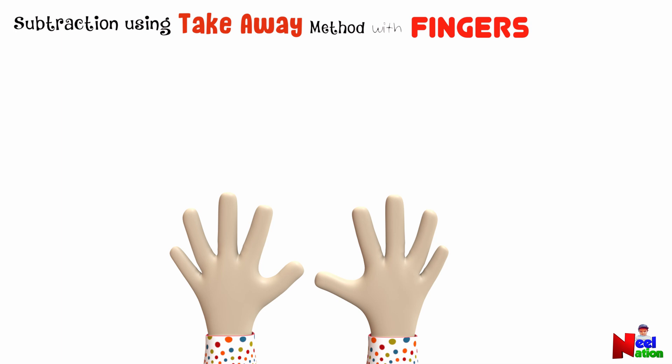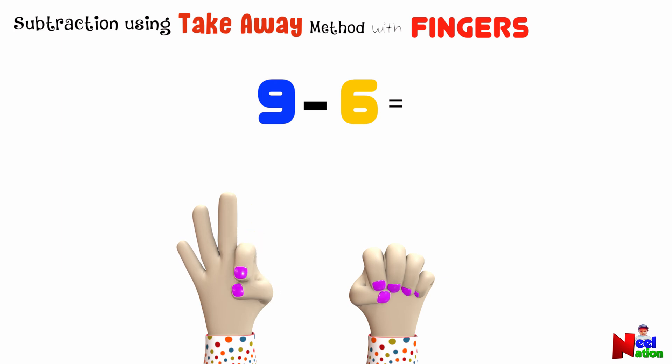Let's do the same take away method using our fingers. Let's take six away from nine this time. So, which number should we begin with? Nine. You're correct. Nine is the bigger number. Let's hold up nine fingers. To take six away from nine, let's fold down six fingers. One, two, three, four, five, and six.